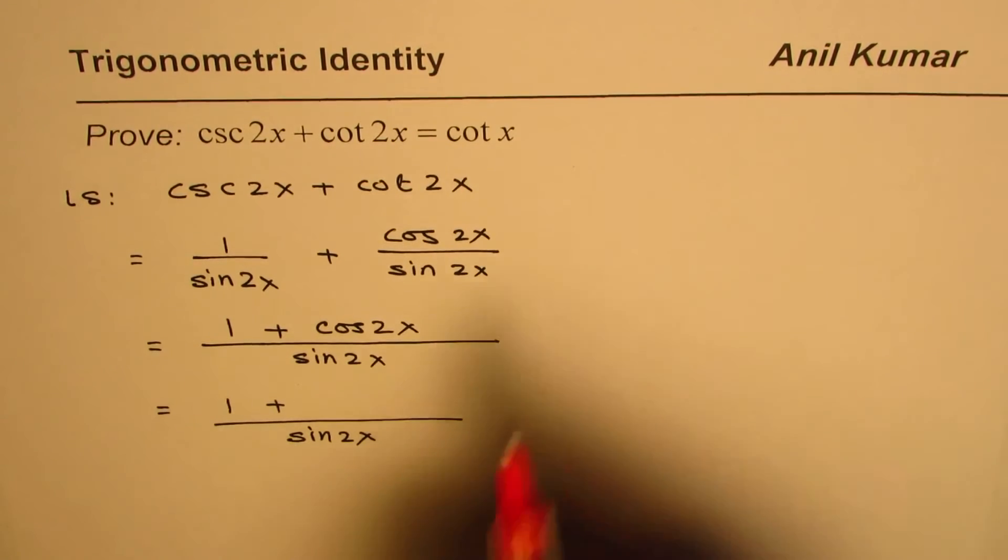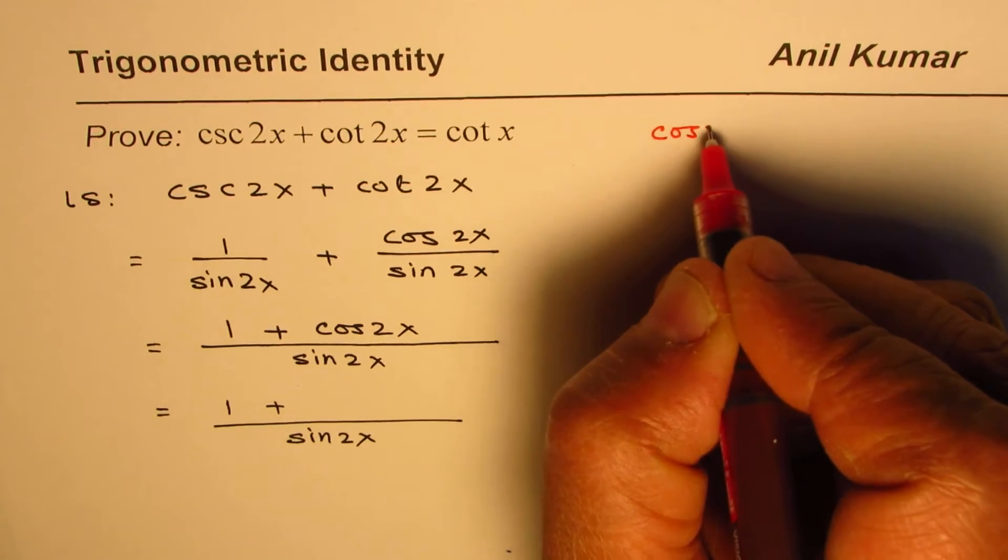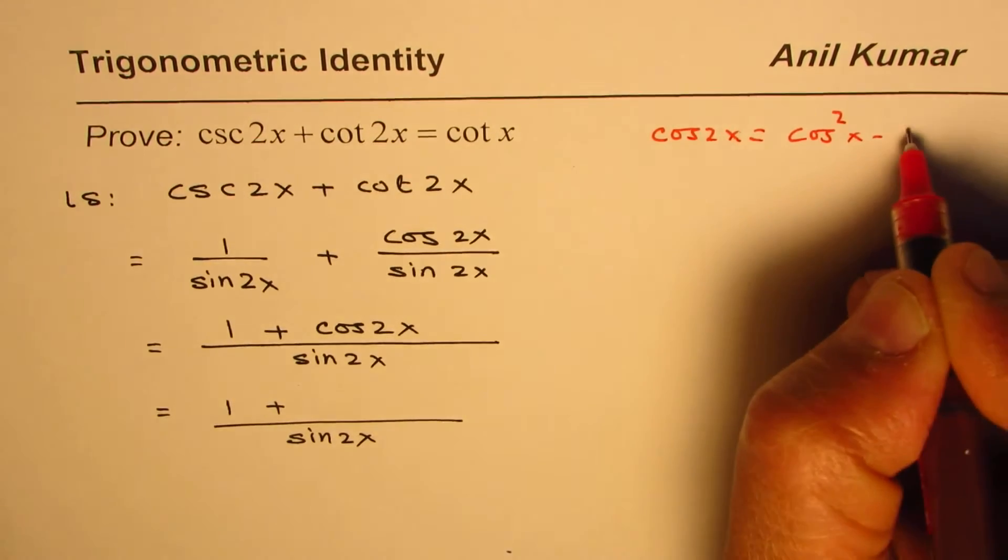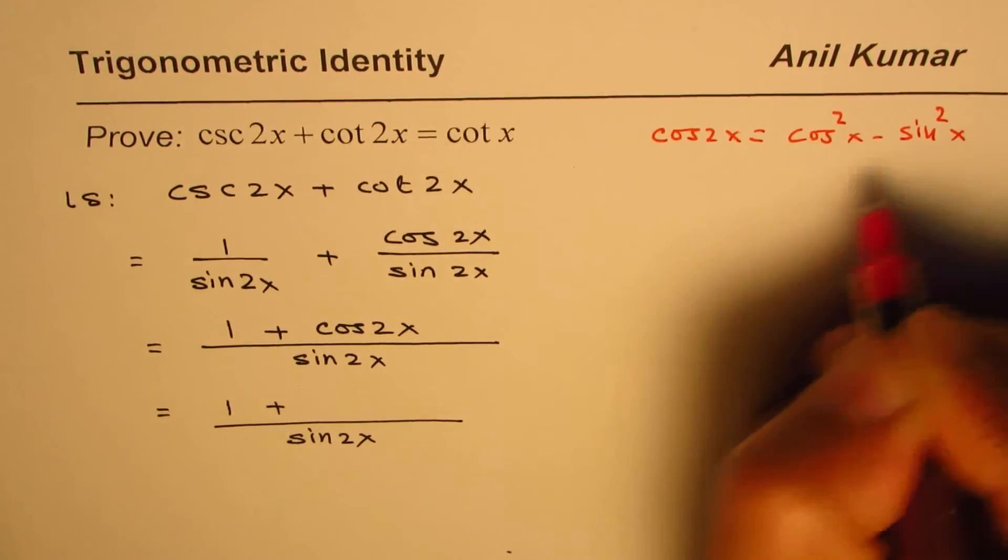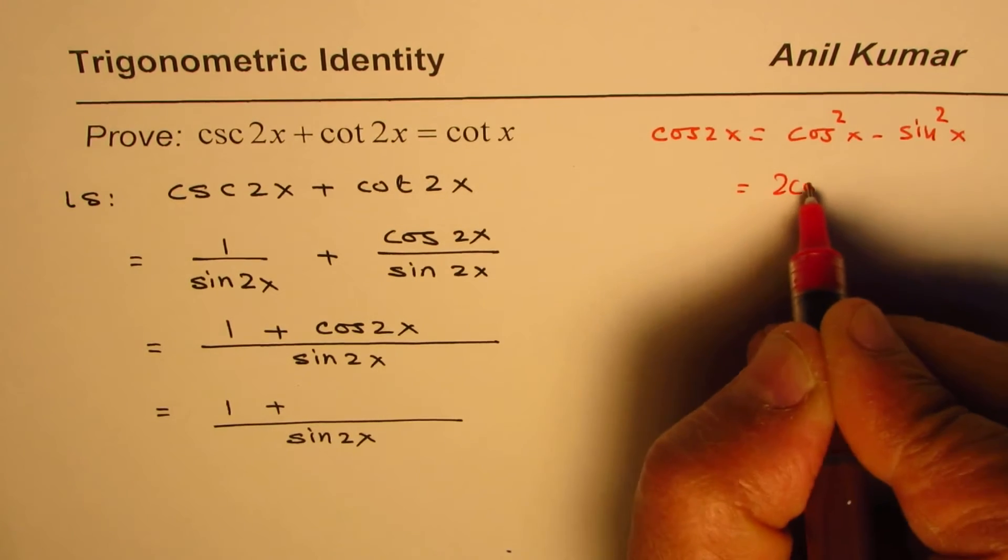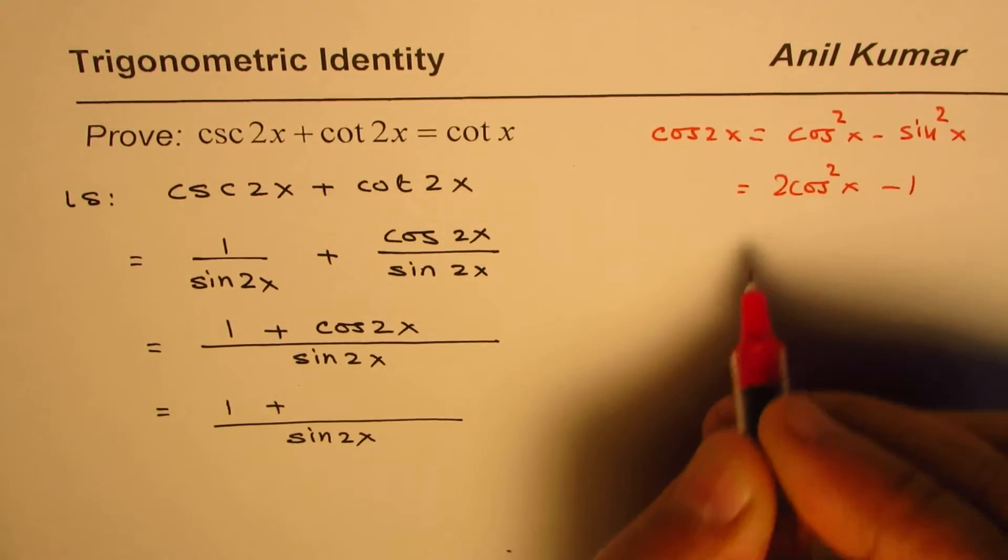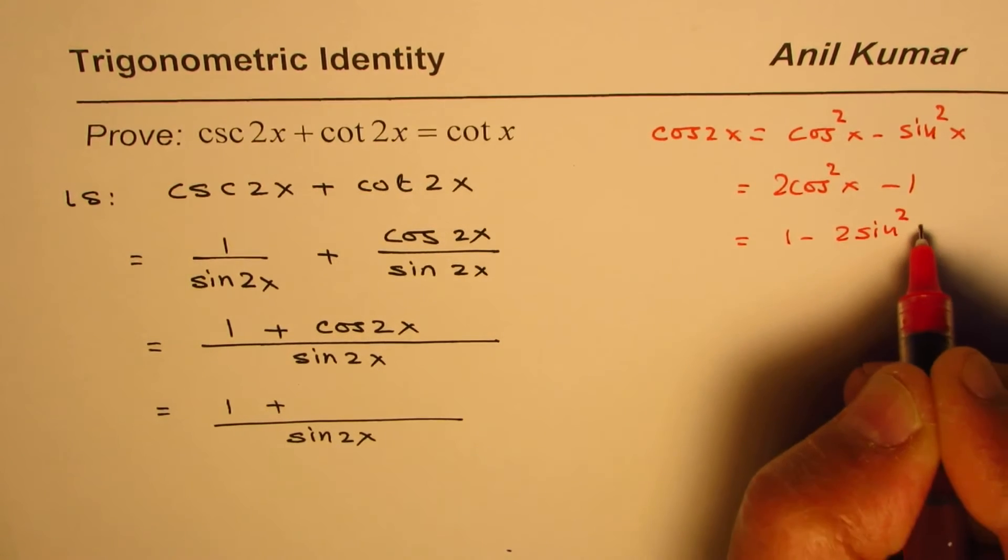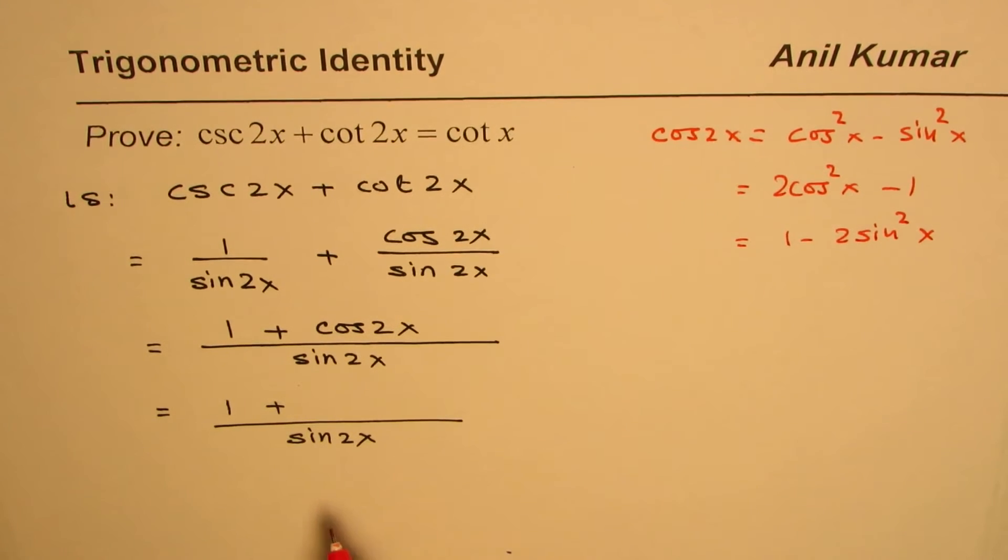Now as you know, cosine 2x can be written in different ways. Cosine 2x is cosine squared x minus sine squared x. It is also equal to 2 cosine squared x minus 1, and is also equal to 1 minus 2 sine squared x. Now which one should you use?